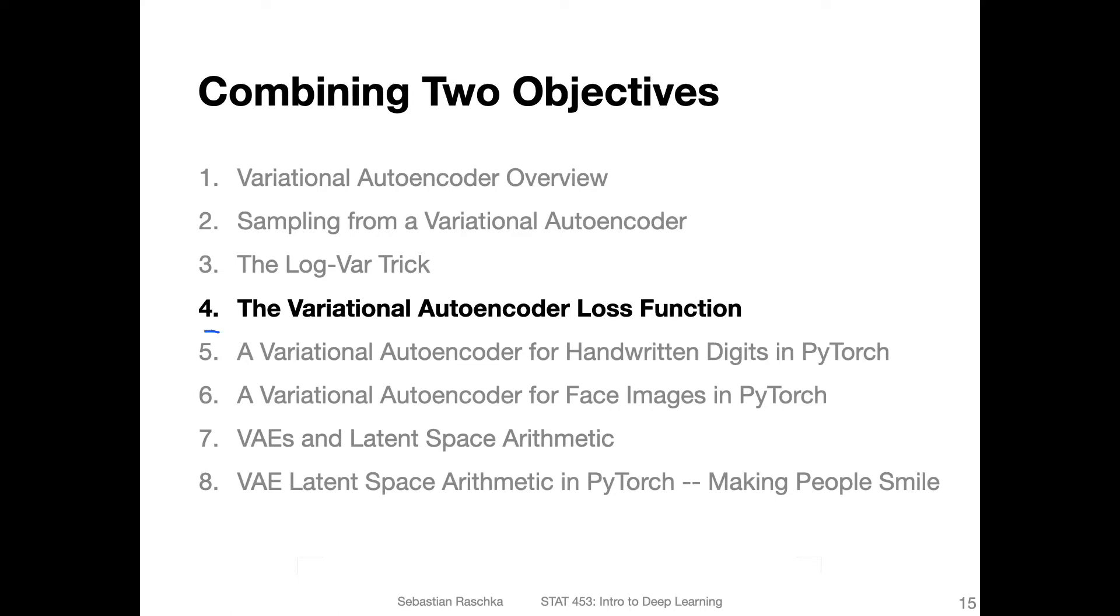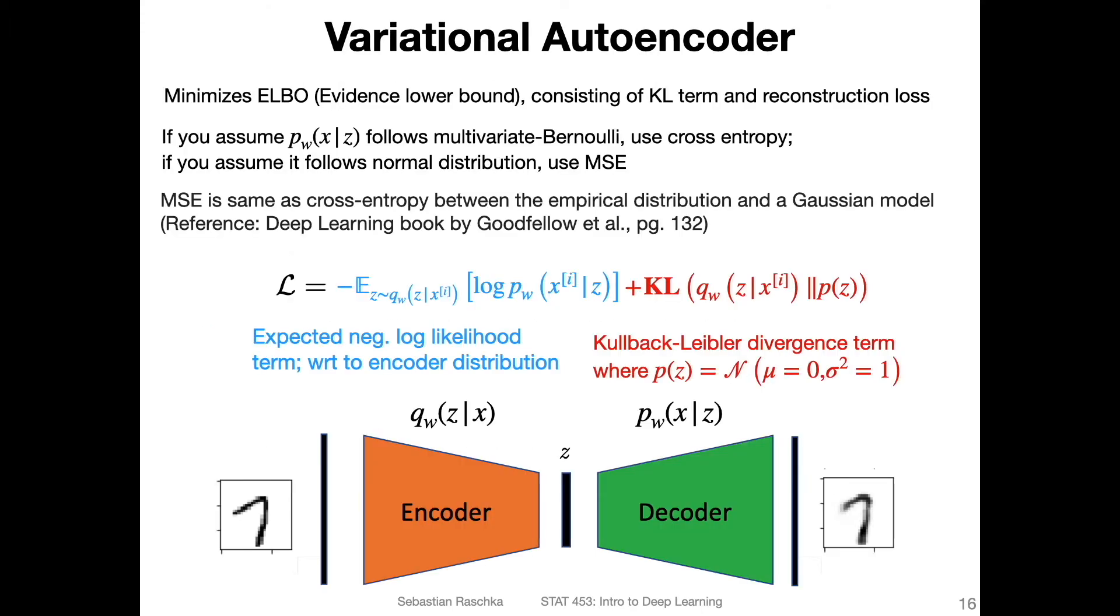Alright, let me now give you the brief picture overview of the loss function of the variational autoencoder. So overall, it's about minimizing ELBO, the evidence lower bound.